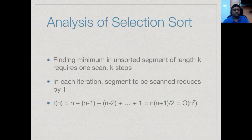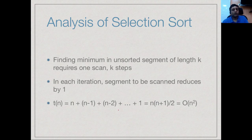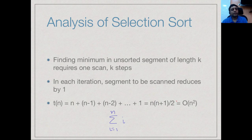How much time does this algorithm take? To find the minimum element in an unsorted segment of length k, we must scan the entire segment, taking k steps. In each iteration the segment reduces by 1. So we scan n elements, then n−1, then n−2, down to 1. The total number of steps is n + (n−1) + (n−2) + … + 1, which equals the summation of i from 1 to n, giving n(n+1)/2, which is O(n²). So selection sort in this iterative implementation is O(n²).